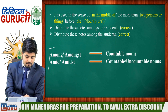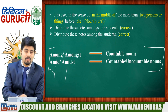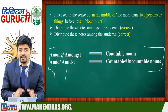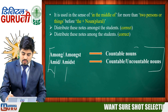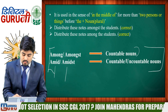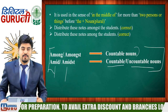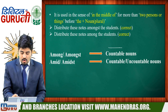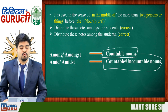'Amid' and 'amidst' are very similar to 'among' and 'amongst,' with one key difference: 'among' and 'amongst' are used only with countable nouns, but 'amid' and 'amidst' can be used with both countable and uncountable nouns. So the only distinction between the two pairs is that amid/amidst work with uncountable nouns as well.